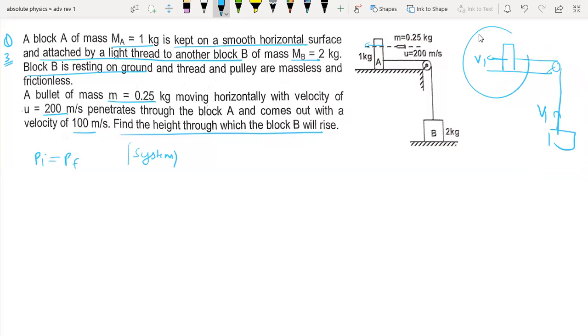We can conserve momentum. The initial momentum of the bullet is 0.25 into 200, and then the bullet exits at 0.25 into 100.